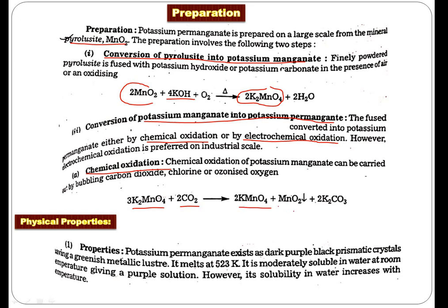The important point here is we are also getting the side product that is MnO2. This means some portion of potassium manganate is getting converted back to MnO2. So economically, it's not a suitable process. So this is all about the preparation.